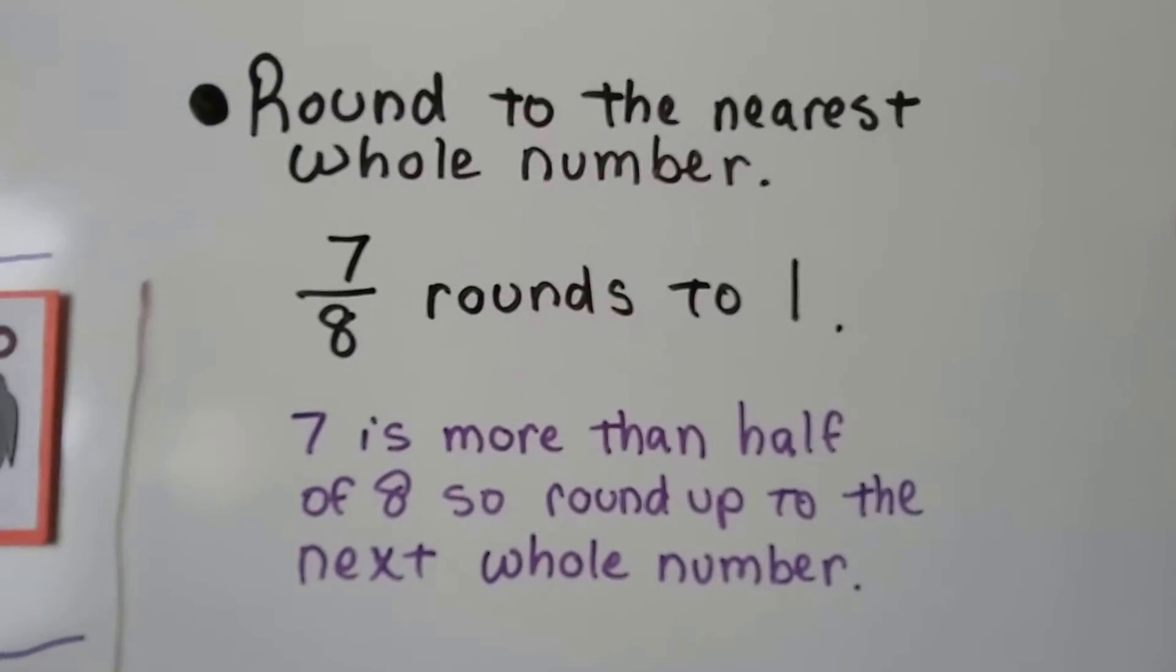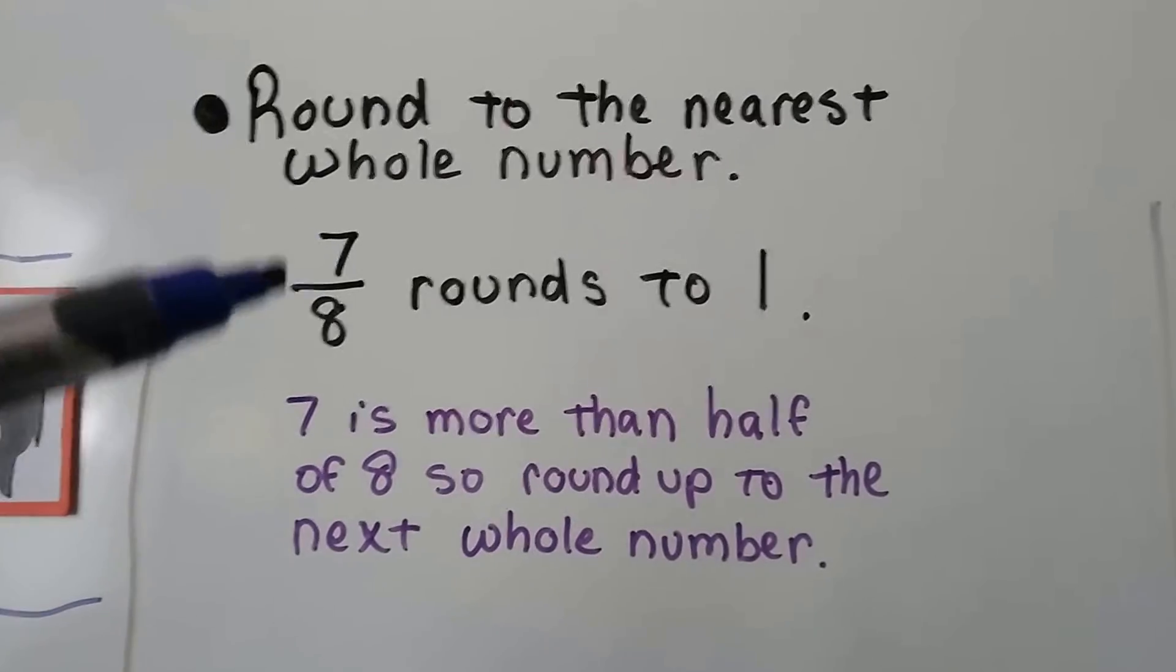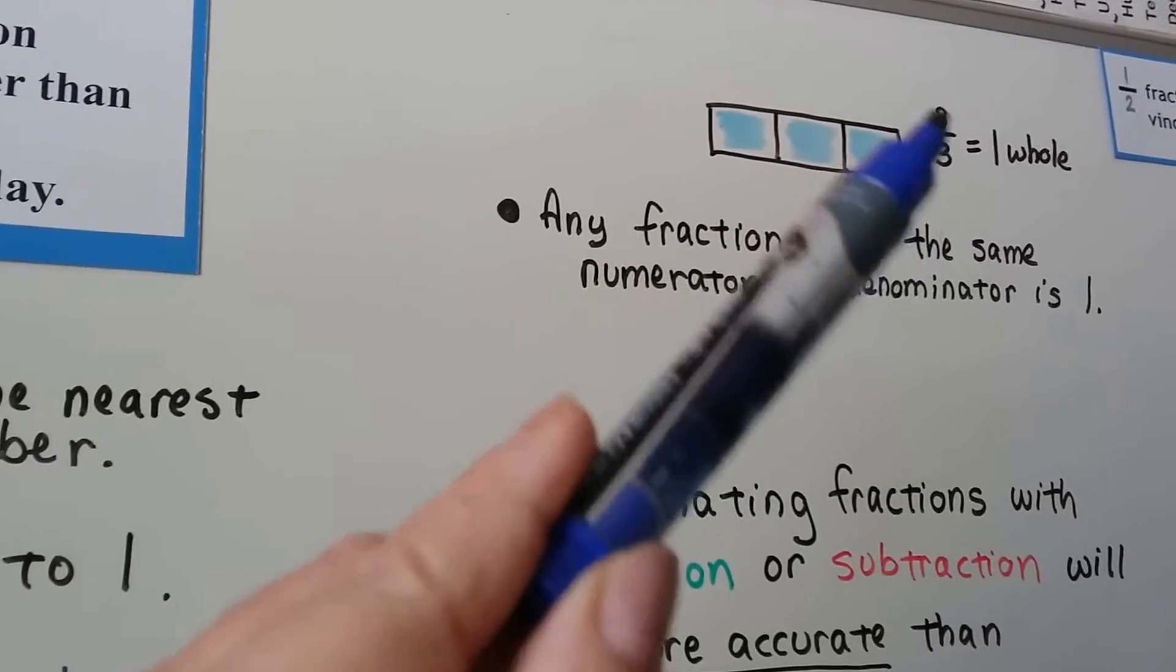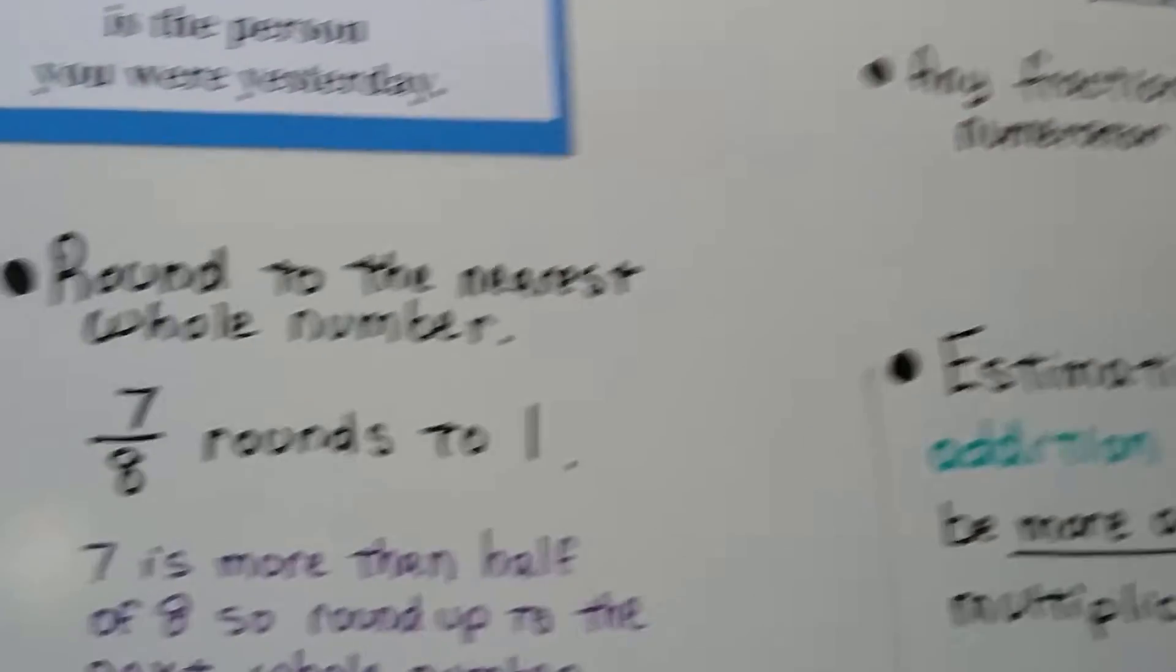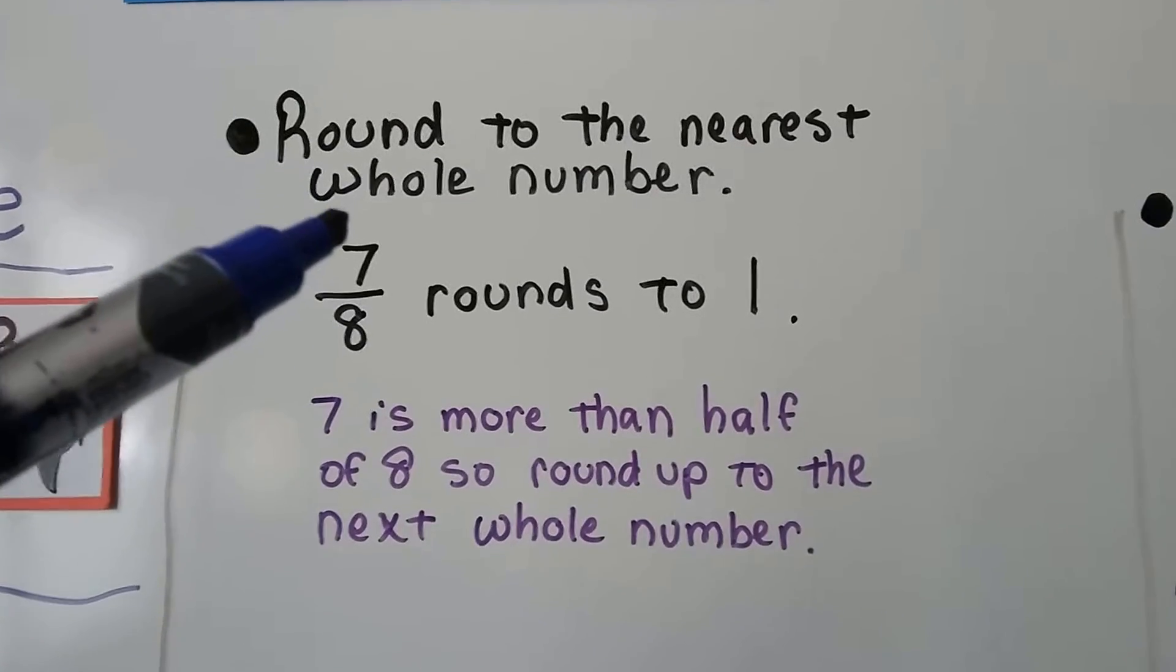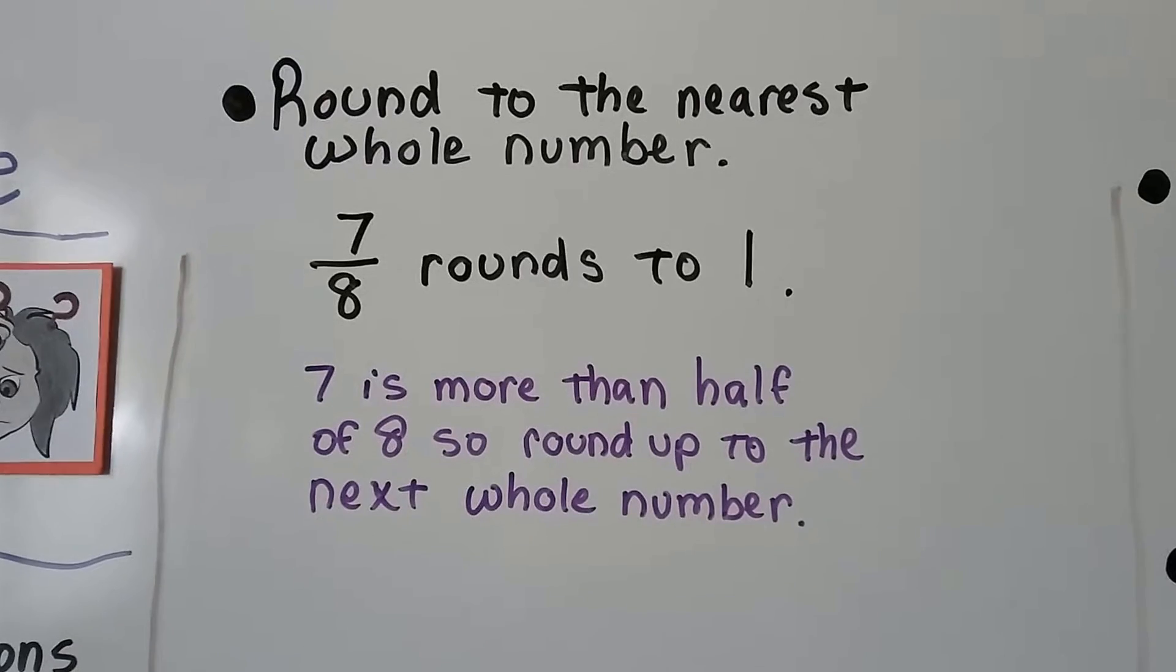Here are some examples. We're going to round to the nearest whole number. 7 eighths is really close to 8 eighths. When the numerator and denominator are the same, it's one whole. So 7 eighths is more than half of 8, so we're going to round that to 1.